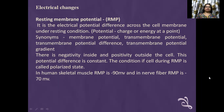First is electrical changes. Resting membrane potential (RMP) is the electrical potential difference across the cell membrane under resting condition. Potential means charge or energy at a point. Synonyms of RMP include membrane potential, transmembrane potential, transmembrane potential difference, or transmembrane potential gradient. There is negativity inside and positivity outside the cell. This potential difference is constant; the condition during RMP is called polarized state. In human skeletal muscle, RMP is minus 90 millivolts, and in a nerve fiber, RMP is minus 70 millivolts.